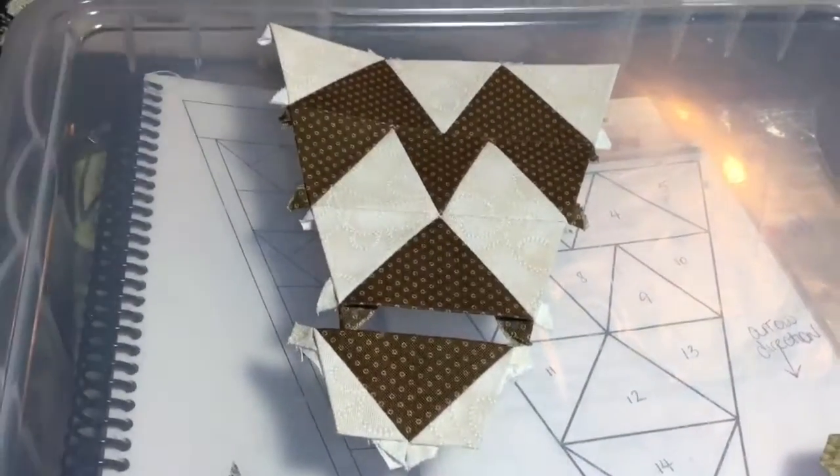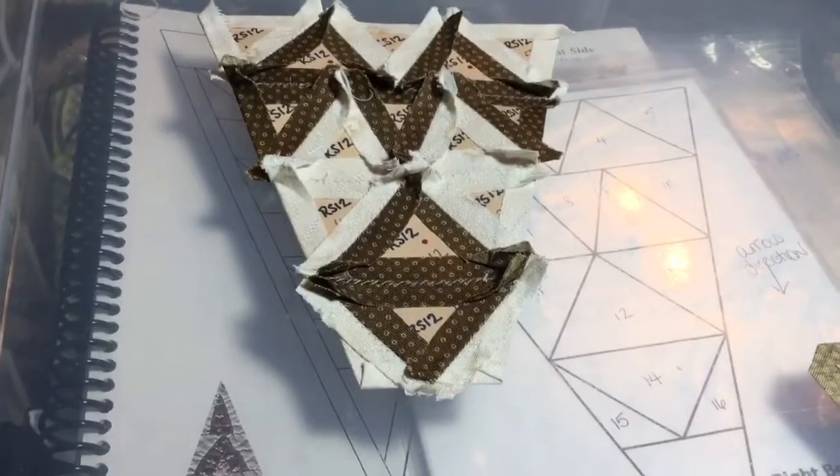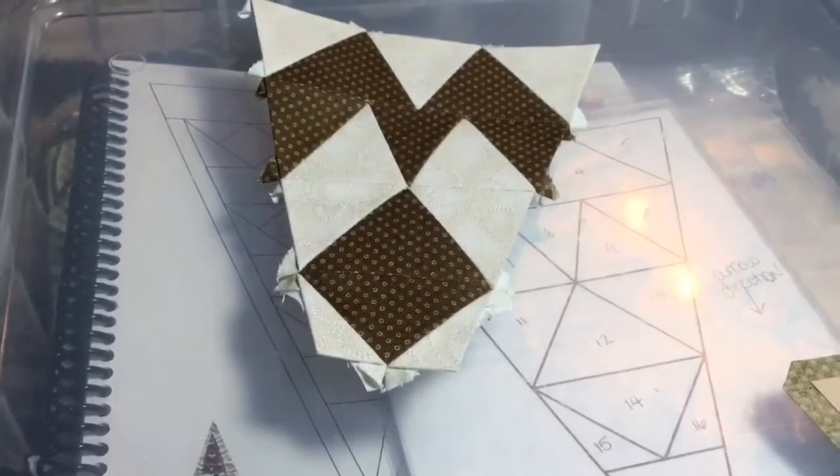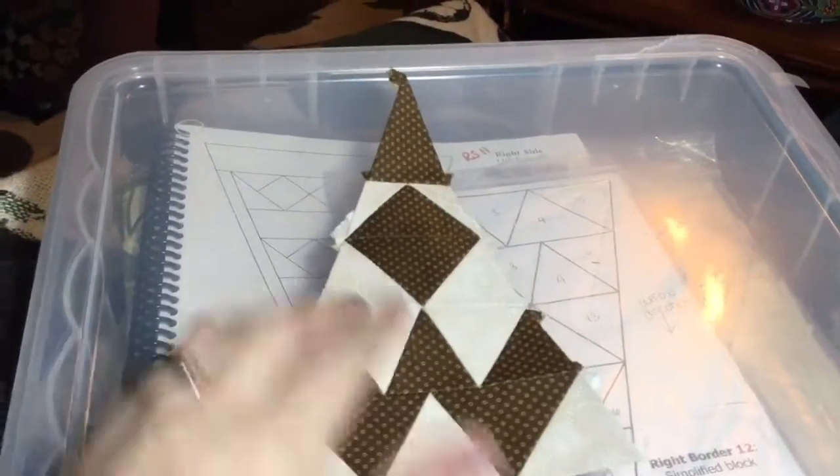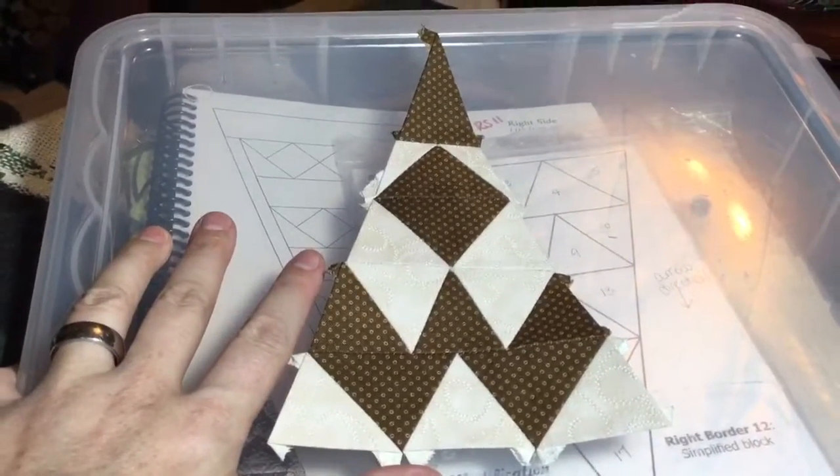I'm going to then take this and connect that to the other rows. Fourth row attached, and this is what it should look like at this point. And finally, add the tip, and now my RS12 triangle is completed.